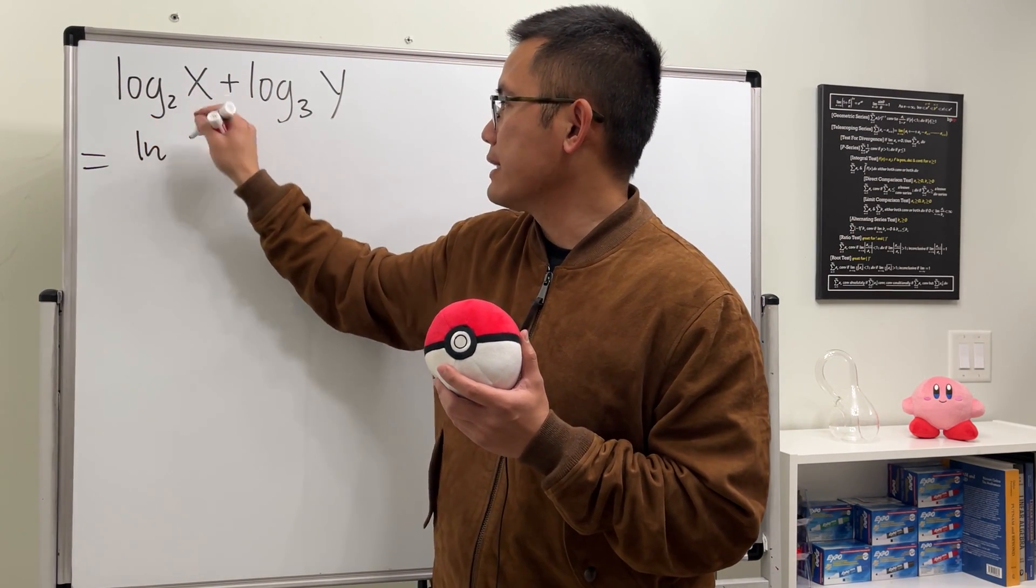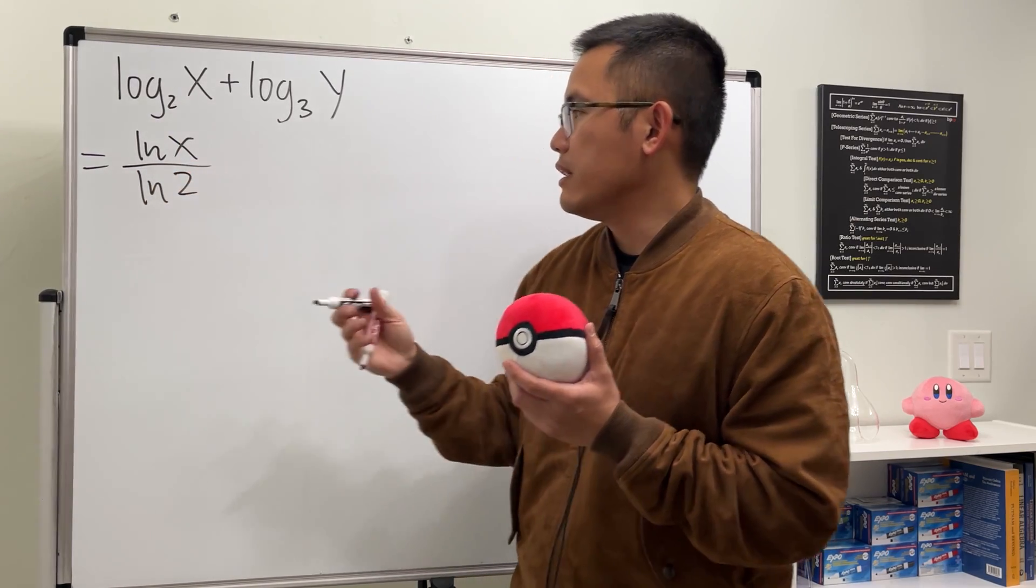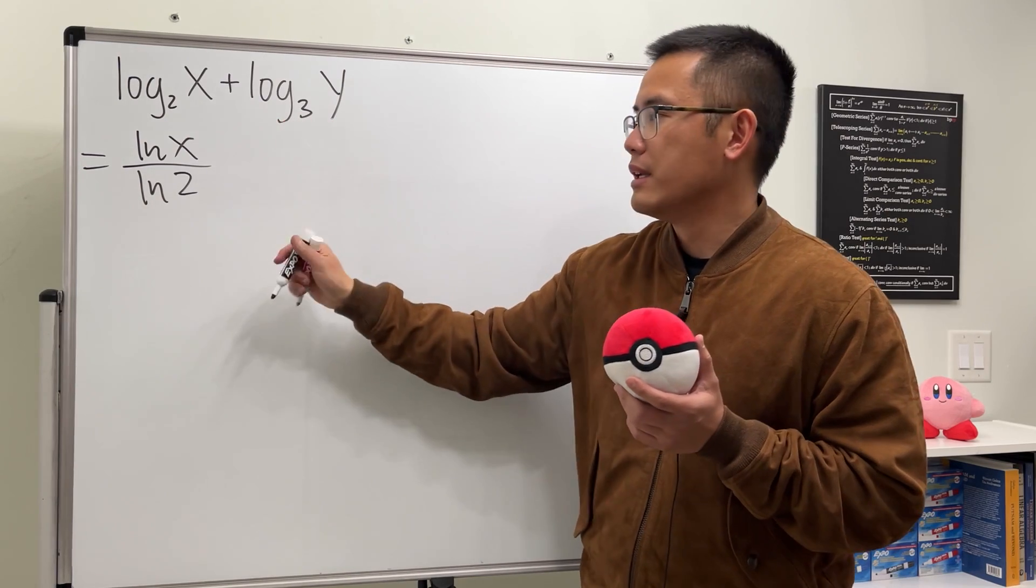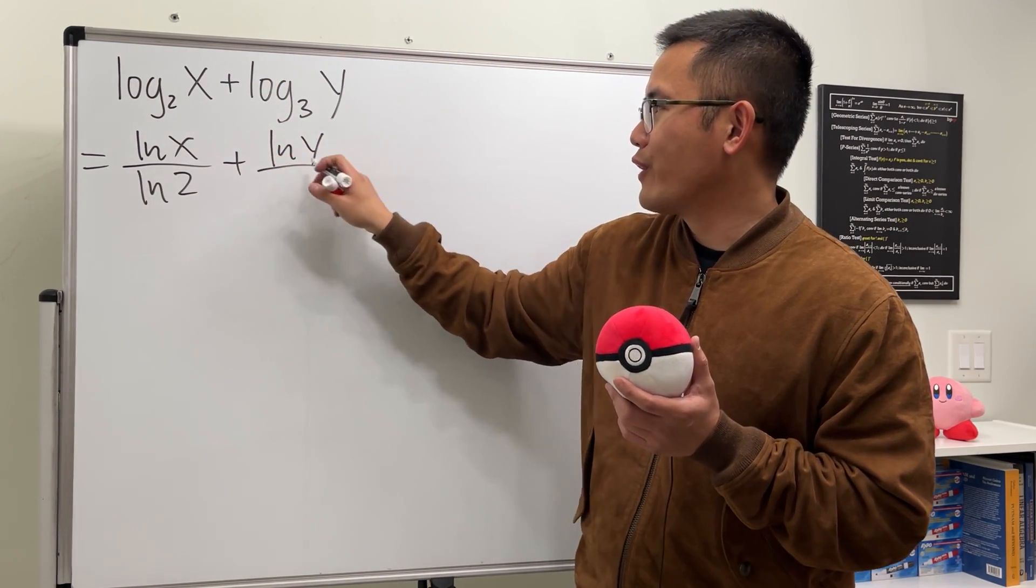So we are going to get ln of x over ln of 2, and again, that's by the change of base formula. And let's do the same thing for the other one, so we are going to add ln y over ln 3.